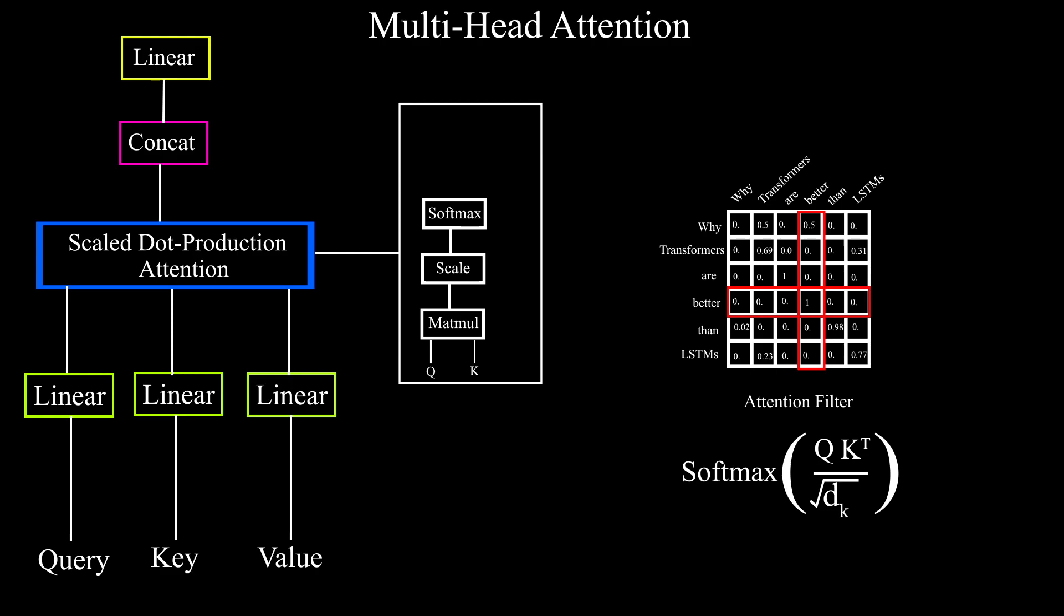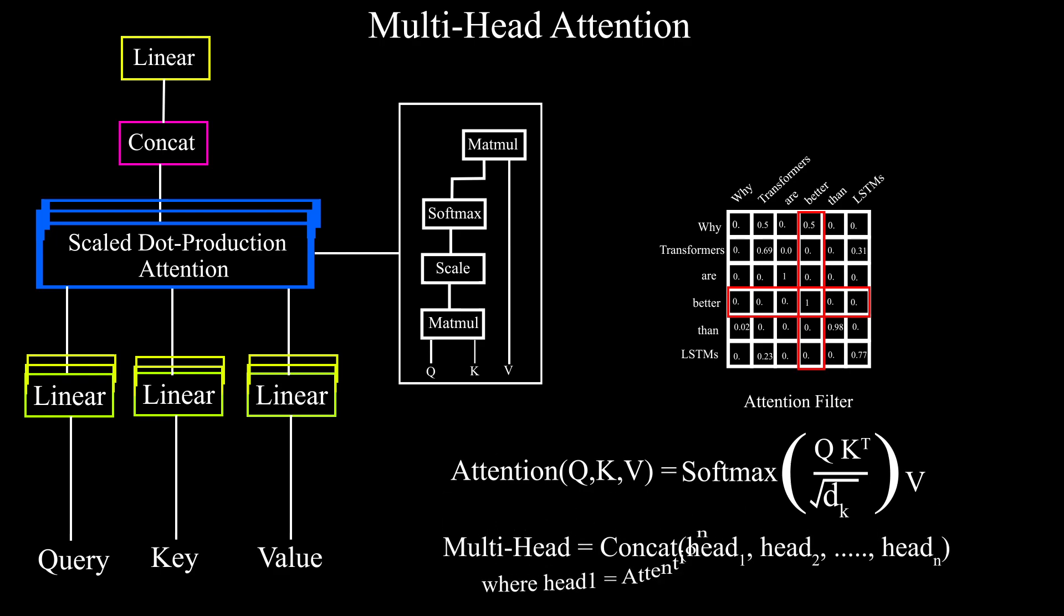Now we have an attention filter that exactly represents how much a word is related to every other word in the sentence. And you just have to take the dot product between this attention filter and the raw values of original vector to get the most important features. But the researchers used multiple attention heads to capture more information and that's the highlight of the paper.